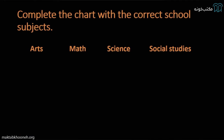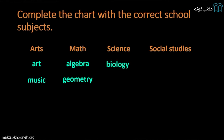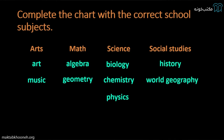Categorizing all the subjects: Art and music are categorized in the arts field. For math, we have algebra and geometry. For science, we have biology, chemistry, and physics. For social studies, we have history and world geography.